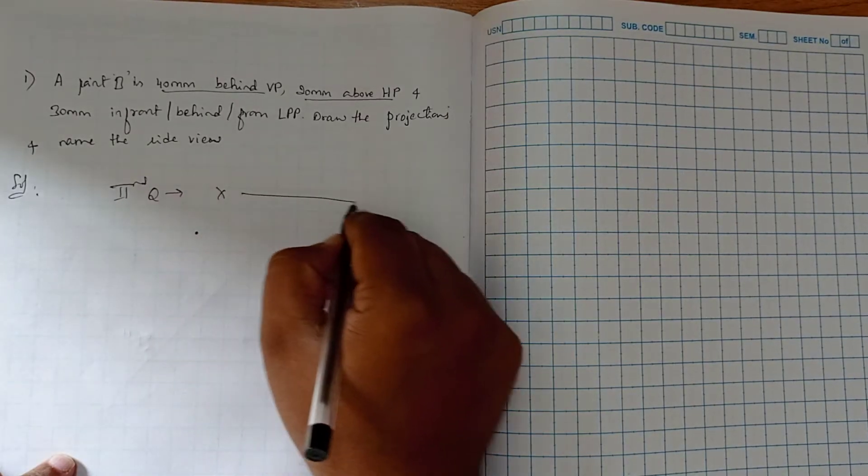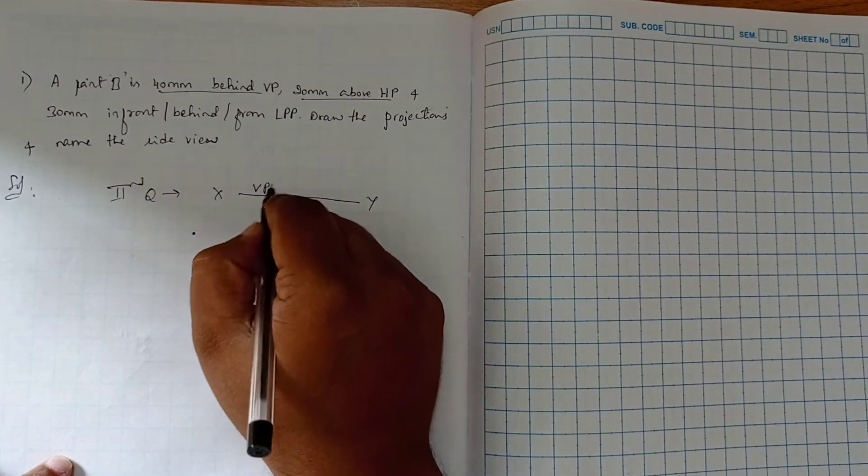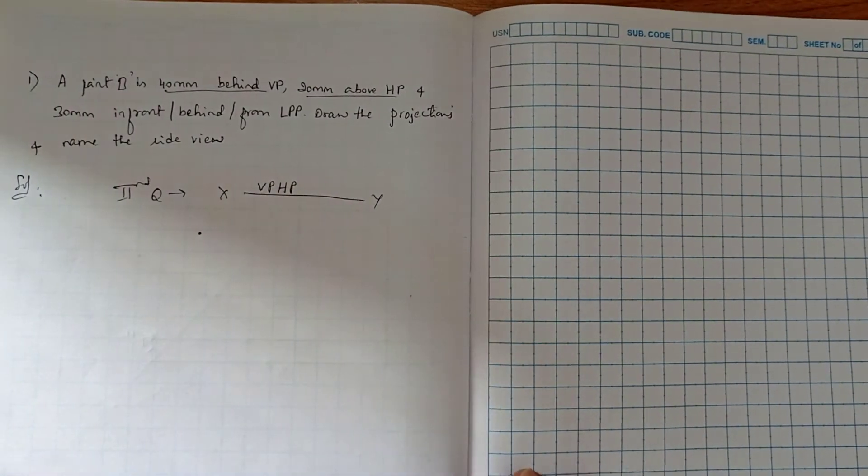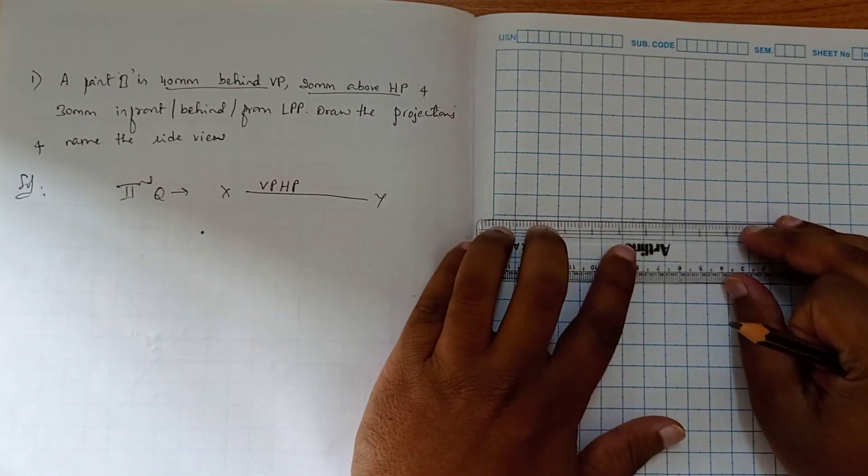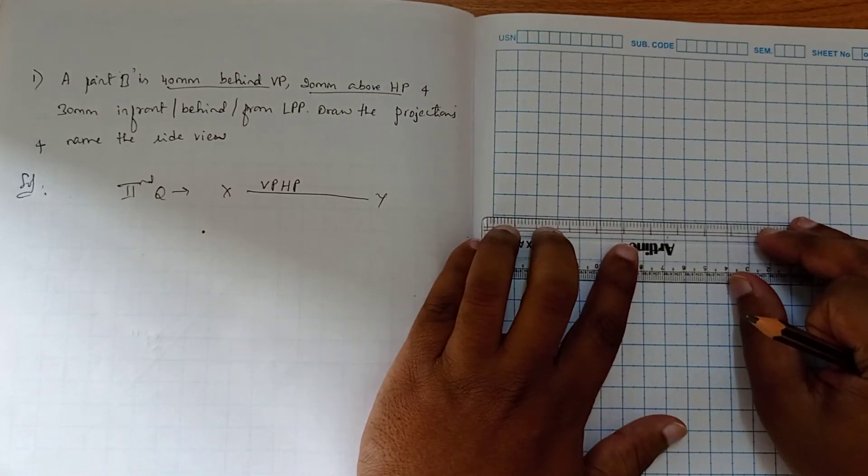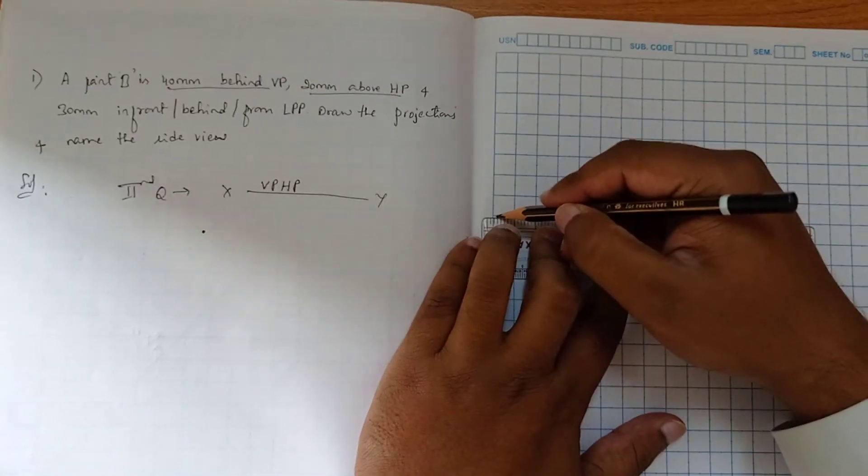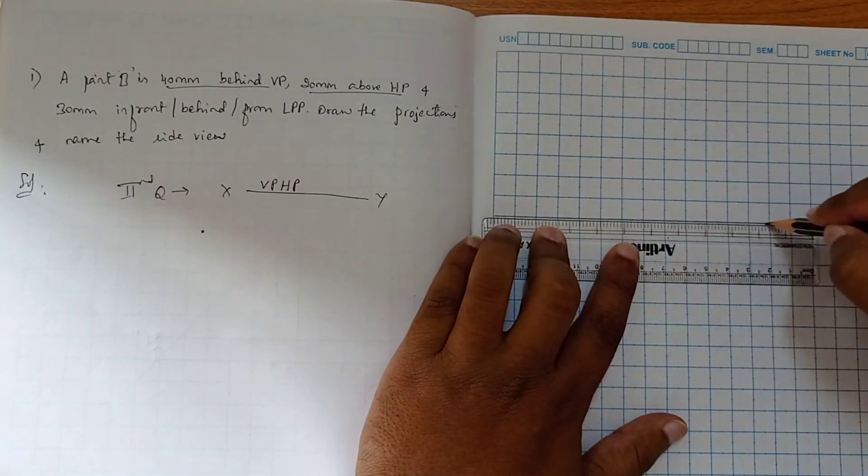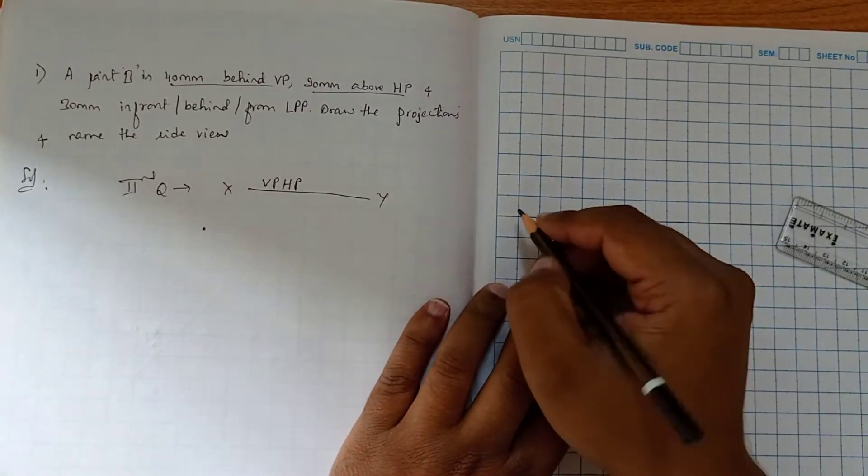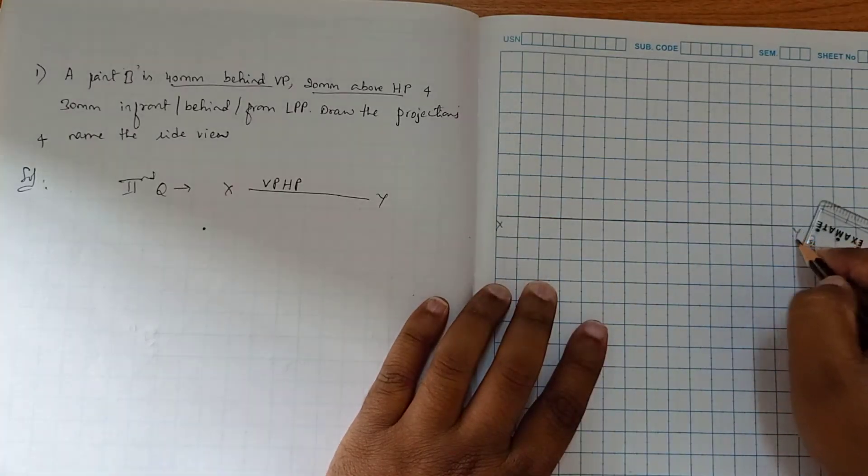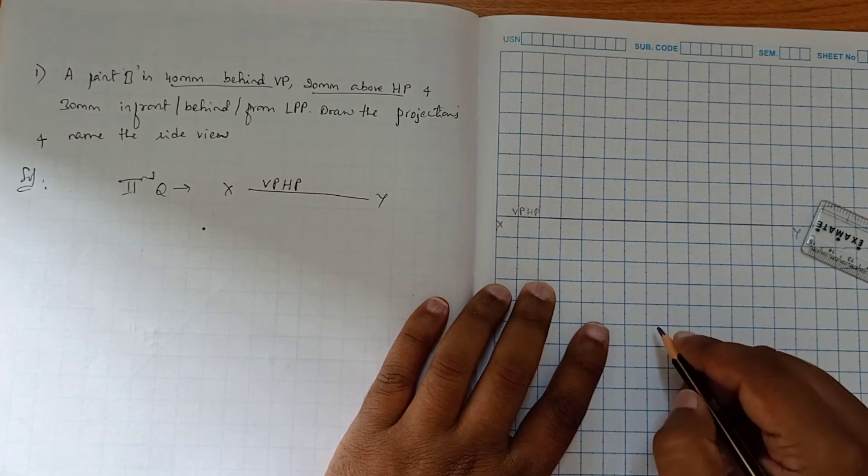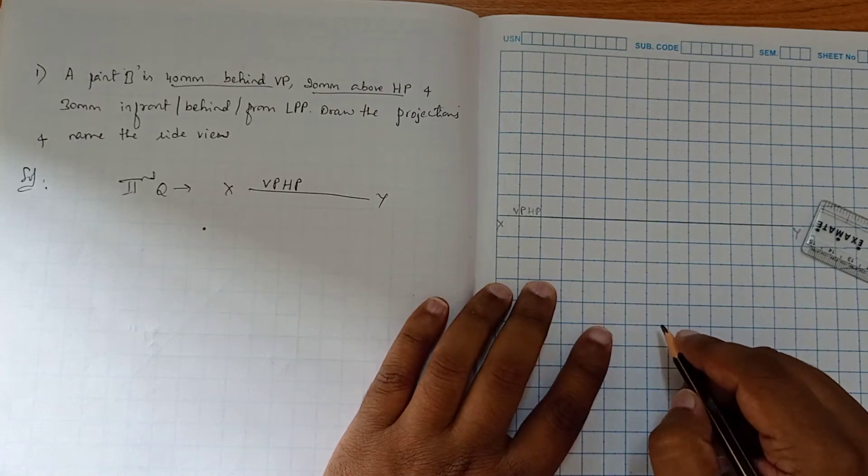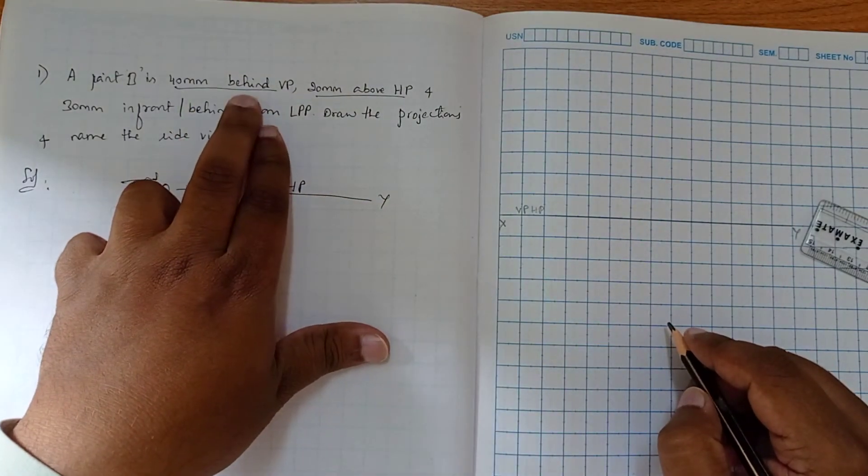We have the vertical plane and horizontal plane line. Now, 40mm behind of VP - behind of VP means it is the top view, okay? Behind of VP means it is the top view.